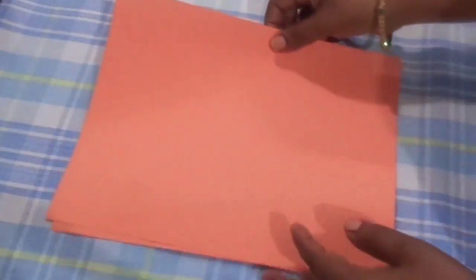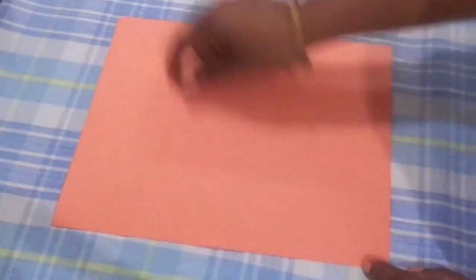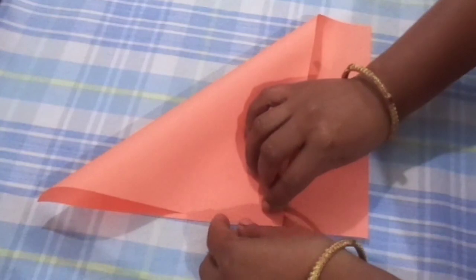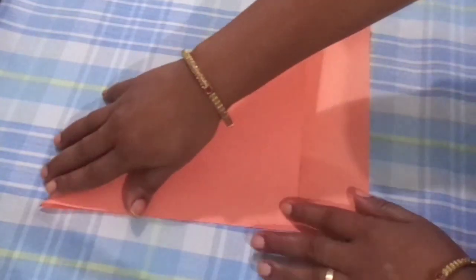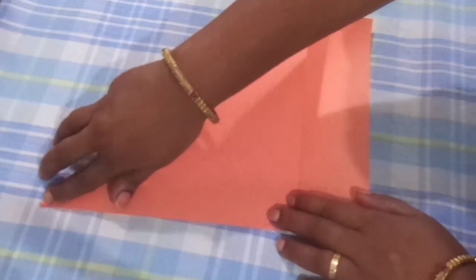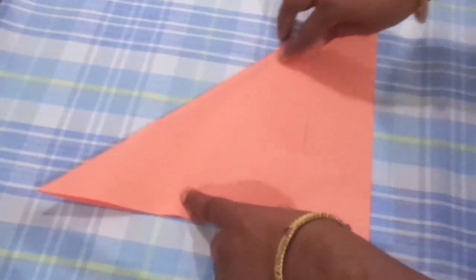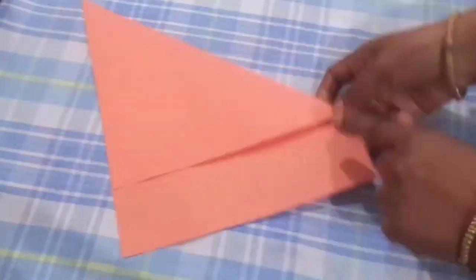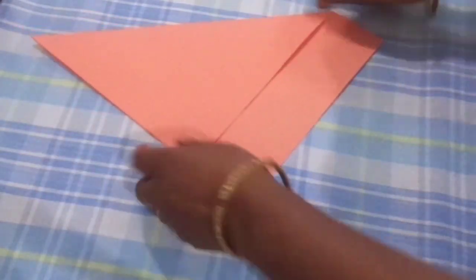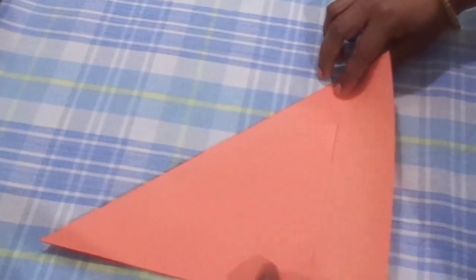So first we have a paper. First of all, if you have a square paper which has four corners equal then well and good. Otherwise, first fold like this. Then after fold, you have extra paper.